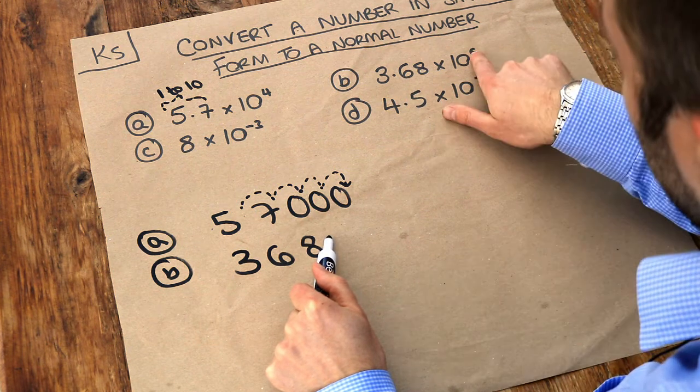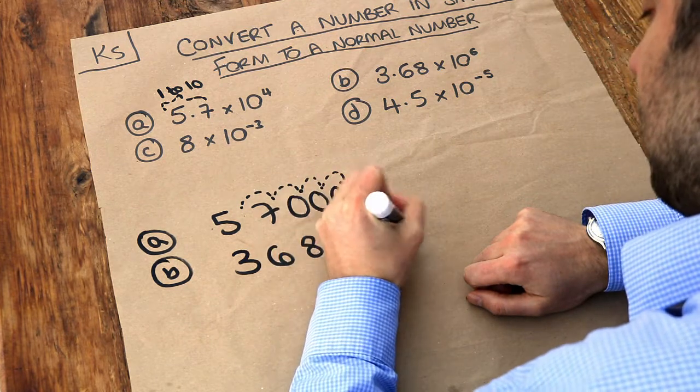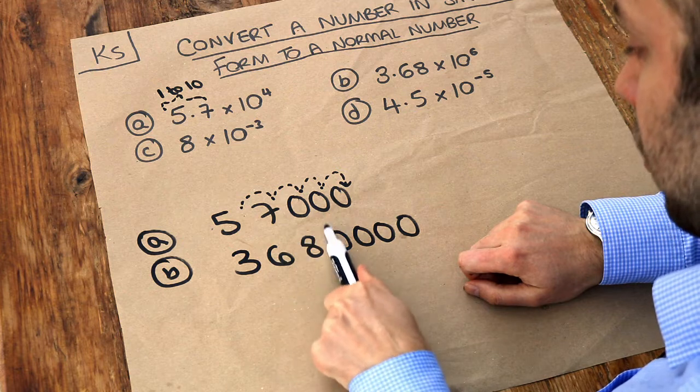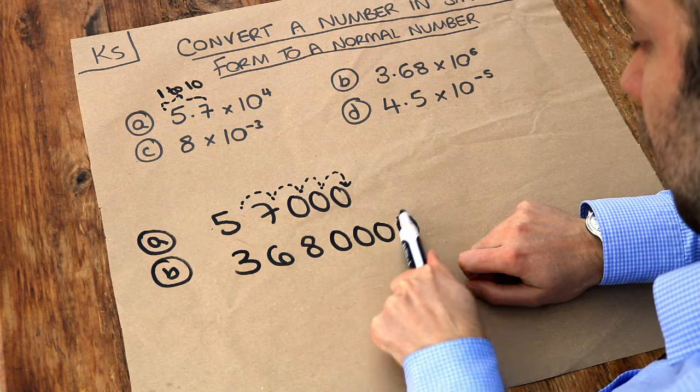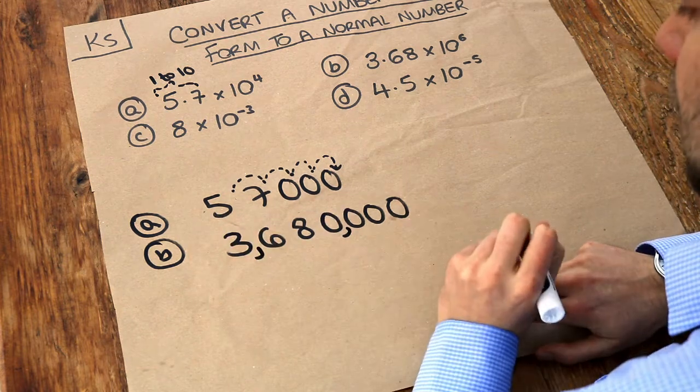But we still need to times by 10 four more times. And therefore we'll add 4 zeros on the end. So let's just double check that: 3.68, 1, 2, 3, 4, 5, 6. That is correct. And let's put the commas in. It's 3,680,000.